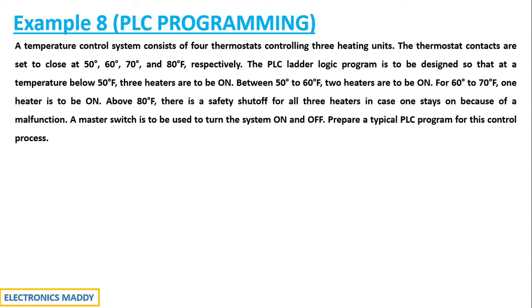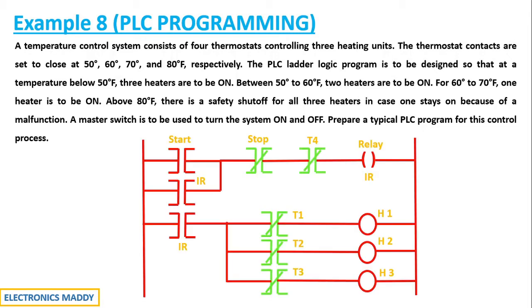The statement is very simple. We have four thermostats controlling three heating units, operated for specific conditions. If the temperature is below 50°F, all three heaters are to be on. If it goes beyond 50 and is from 50 to 60, only two heaters are to be on. If it is from 60 to 70, only one heater should be on. Above 80, all of them should be shut off. Let's look at the ladder diagram and correlate it with the requirement.